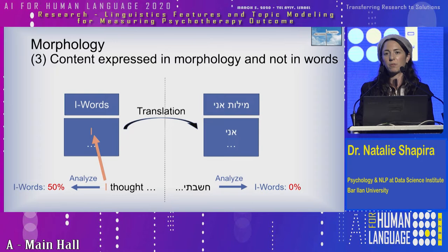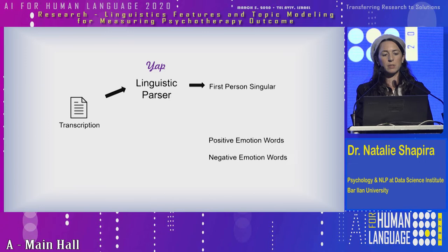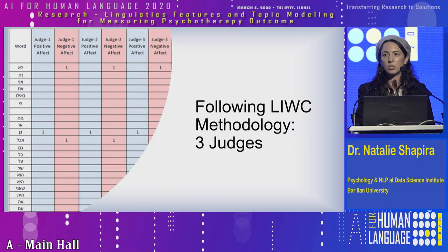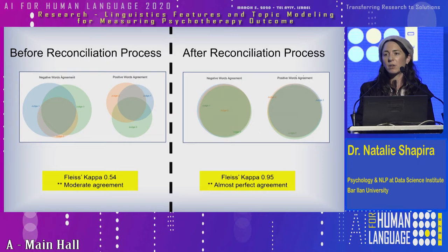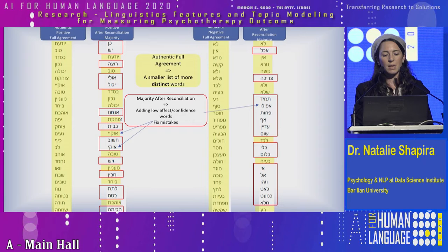How do we deal with the challenge? For the first-person singular, we used YAP, which is a linguistic parser in Hebrew. And to calculate positive and negative emotion words, we created lexicons. We followed LIWC methodology with three judges — psychology students — to create the lexicons, and then went through a reconciliation process. After reconciliation, we got almost perfect agreement. Here you can see the two lexicons before and after the reconciliation process. After the reconciliation, we added some words with low affect.